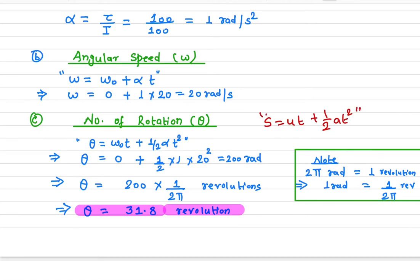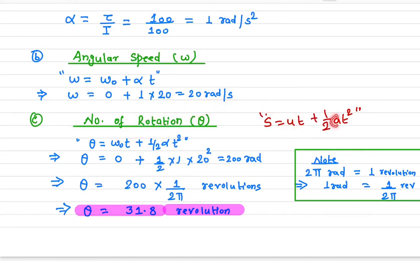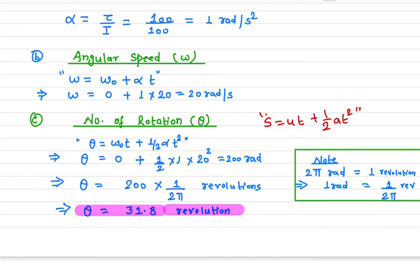In linear motion we talk about distance; in rotational dynamics we talk about theta. The linear velocity u is replaced by angular velocity omega-naught, and the linear acceleration a is replaced by angular acceleration alpha. If you know the linear relation, you can translate it directly into rotational dynamics.